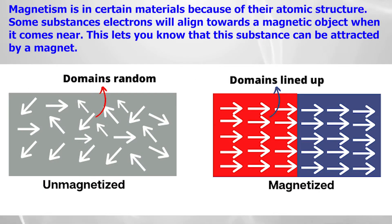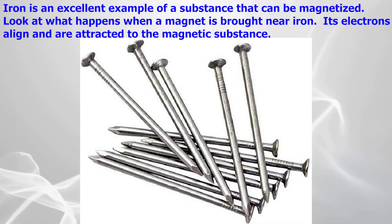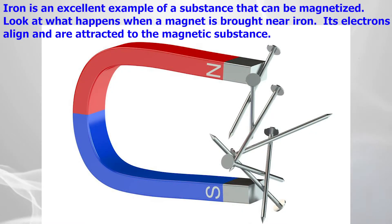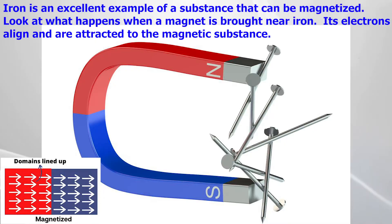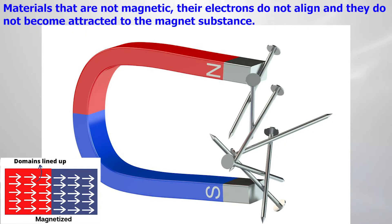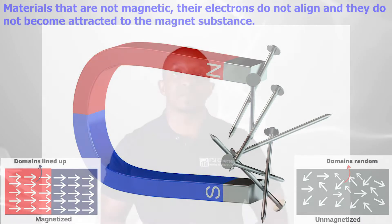Magnetism is present in certain materials because of their atomic structure. Some substances' electrons will align toward a magnetic object when it comes near, which lets you know that the substance can be attracted by a magnet. Iron is an excellent example of a substance that can be magnetized. When a magnet is brought near iron, its electrons align and are attracted to the magnetic substance. Materials that are not magnetic have electrons that do not align, and they do not become attracted to magnetic substances.